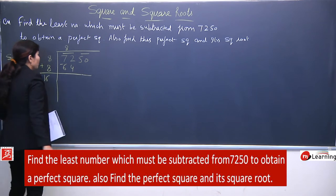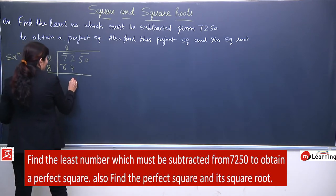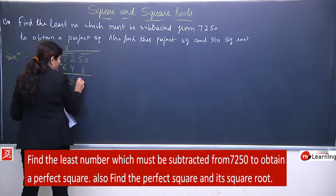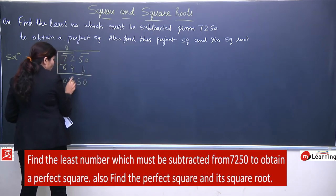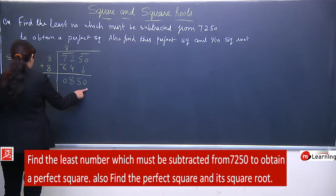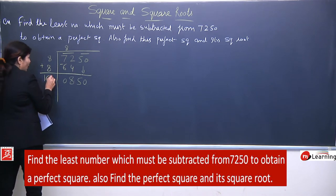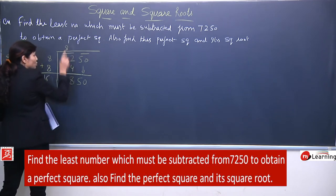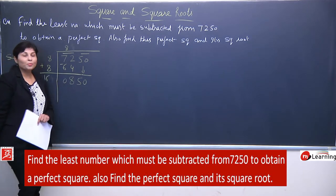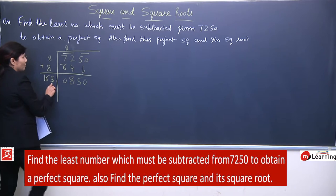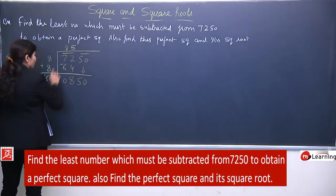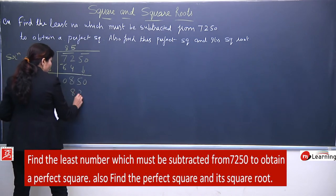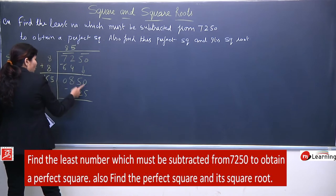Using the long division method: 72 mein se 64 subtract hoga, 12 mein se 4 gaya toh yahan 8 aayega. Yeh 0 ho gaya. Ab pair copy karenge — 50 poora copy hoga. So now your number is 850 aur yahan number hai 16. Aap aisa number choose karenge — jaise 4 liya toh 4 lenge, 5 liya toh 5 lenge.